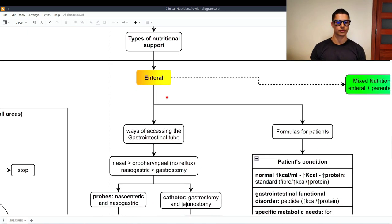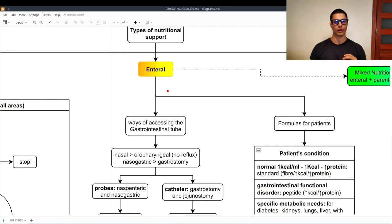Now let's take a look at the enteral nutrition. So this one is the one we use some probes or catheters to reach the gastrointestinal tube and therefore give formulas that are highly digestible and highly absorbable to avoid or try to avoid the malnutrition.